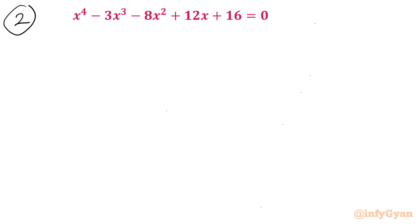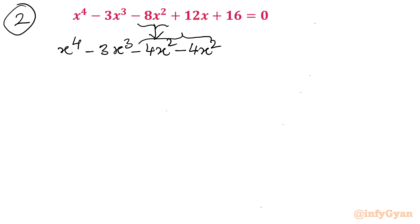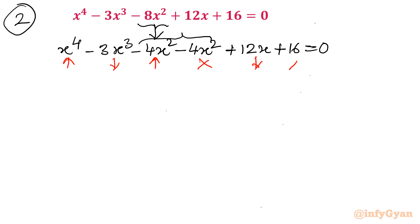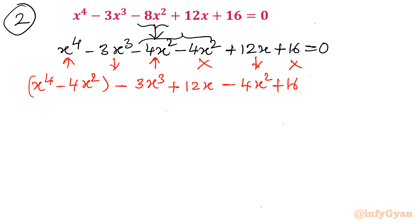Method number 2, using factorization. I will write the minus 8x squared term as minus 4x squared minus 4x squared and split it. Keeping the rest unchanged, I now club x to the fourth and the negative 4x squared term in one bracket, then minus 3x cubed plus 12x in a second bracket, and minus 4x squared plus 16 in the third bracket.